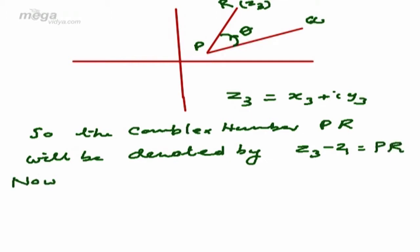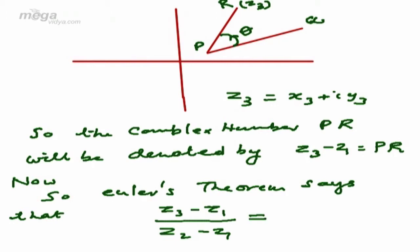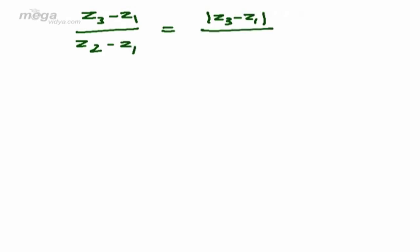We have rotated the line PQ to the new position PR in the anti-clockwise direction with angle theta. Euler's theorem says that (Z3 - Z1) divided by (Z2 - Z1), that is the new position over the initial position, equals the length of the final position divided by the length of the initial position, multiplied by e^(iθ), where theta is the angle between lines PQ and PR. So we write: (Z3 - Z1)/(Z2 - Z1) = |Z3 - Z1|/|Z2 - Z1| · e^(iθ).